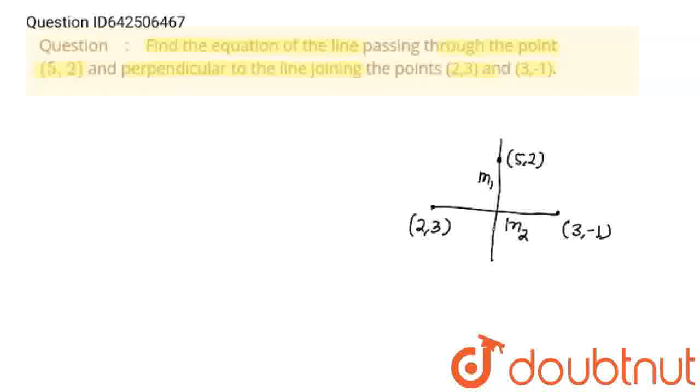So if we get the slope of this line and we have a point, then we can simply find the equation of this line. So m2 will be equal to y2 minus y1, 3 minus (-1), which is 4, upon 2 minus 3, which is minus 1. So m2 is equal to minus 4.